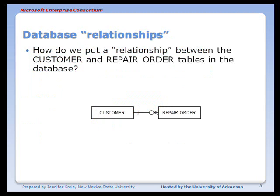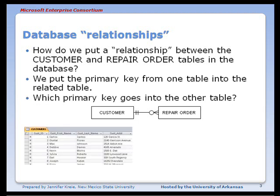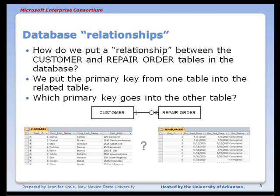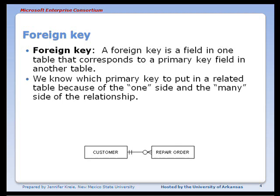So how do we put a relationship between customer and repair order as tables in the database? We will put the primary key from one table into the related table. A foreign key is a field in one table that corresponds to a primary key field in another table. We know which primary key to put in the related table because of the one side and the many side of the relationship.